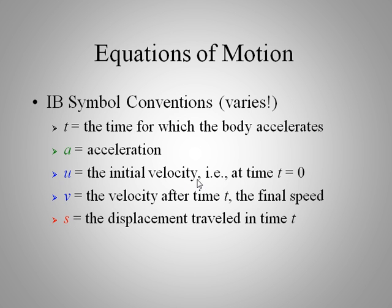For example, this initial velocity, it's very common. Some textbooks use V0 or V sub I with a little I subscript to mean initial as the initial velocity. IB uses this u, so you just need to be aware of that.